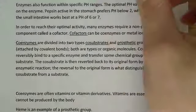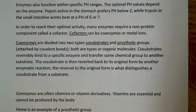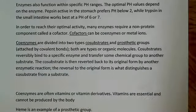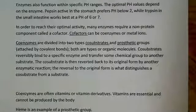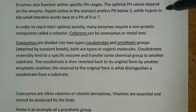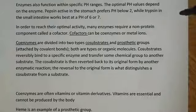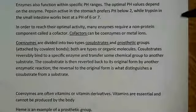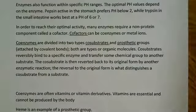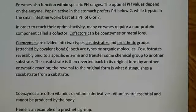Enzymes also function within specific pH ranges. The optimal pH value depends on the enzyme, because it depends on what type of interactions are going on within the globular protein and what type of active site we have. Two classic examples: pepsin, which is active in the stomach, prefers a pH below 2 — which makes perfect sense since stomach pH is very low — while trypsin in the small intestine works best at a pH of 6 or 7.